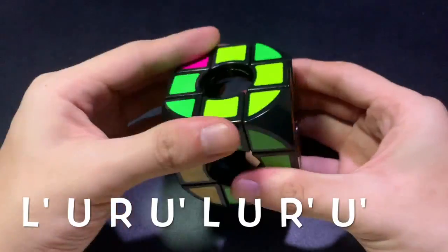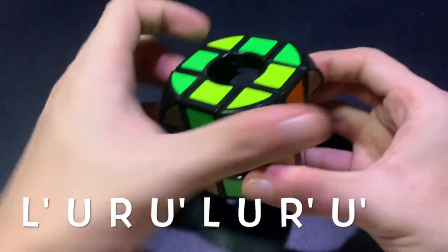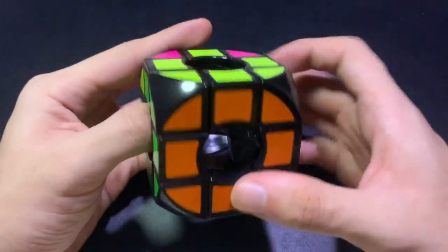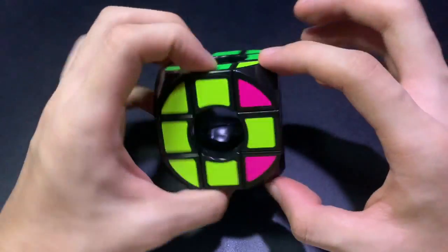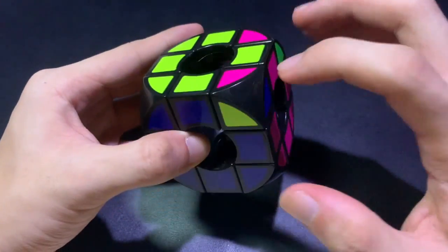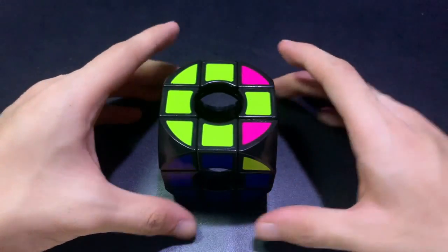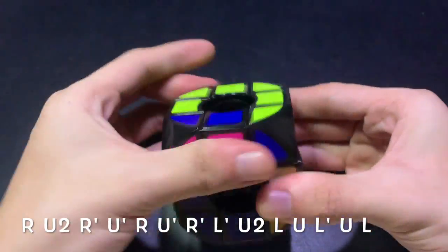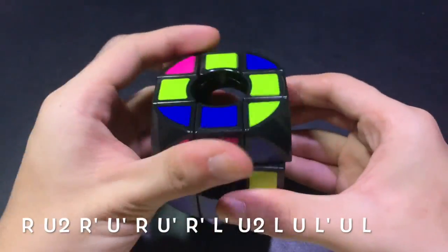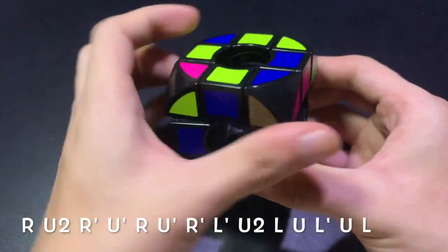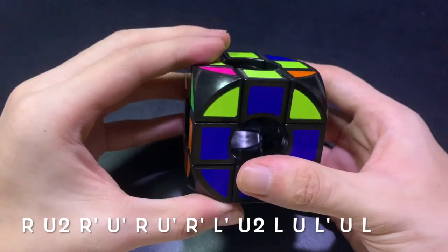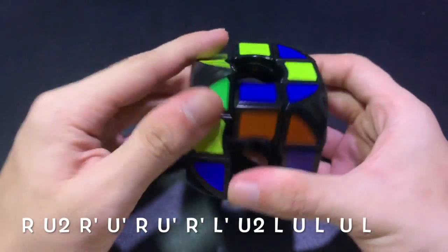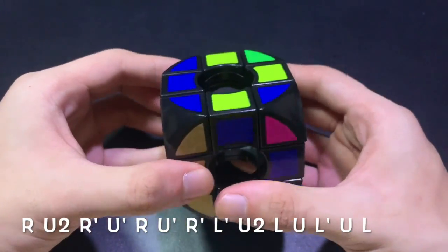So there are four correct pieces. But since these two are not oriented, let's do one final algorithm. The algorithm goes like this. So it's r, u2, r prime, u prime, r, u prime, and r prime. And then l prime, u2, l, u, l prime, u, and l.